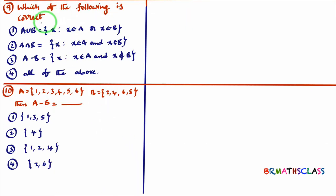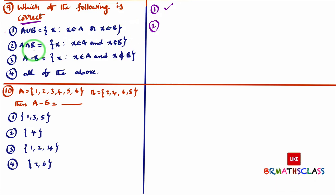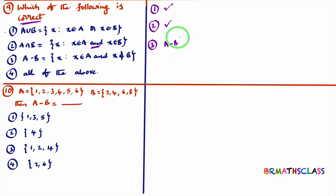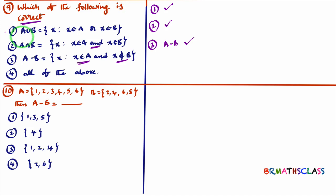Question 9: which of the following is correct? First option: A ∪ B = {x : x ∈ A or x ∈ B} — this is correct as we learned in the synopsis. Second option: A ∩ B contains all elements present in both A and B — also correct. Third option: A - B = {x : x ∈ A and x ∉ B}, all elements in A but not in B — correct. Since all three options are correct, we choose 'all of the above.'